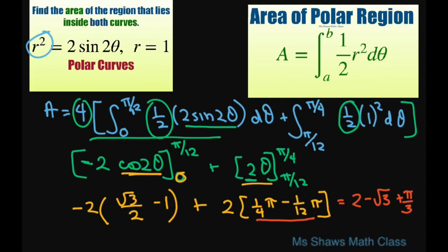Basically, the common denominator is 12. So this is going to be 3π minus π. And that gives you 2π/12, which is π/6. But then you have this 2. So that's your final answer.